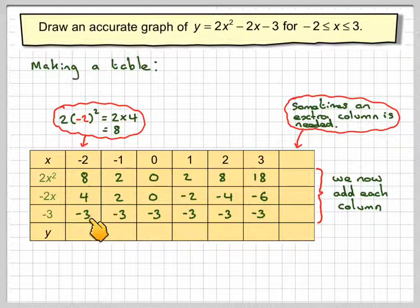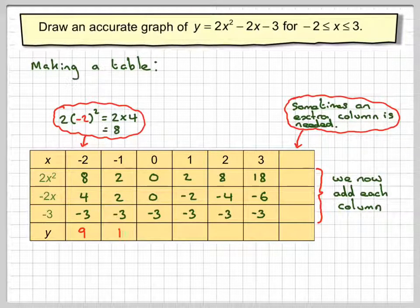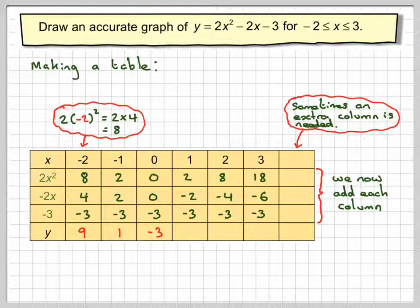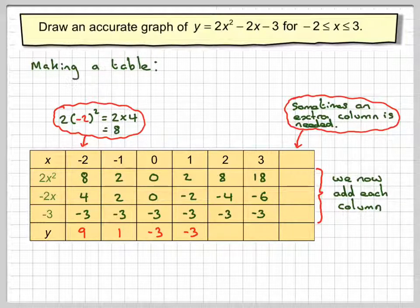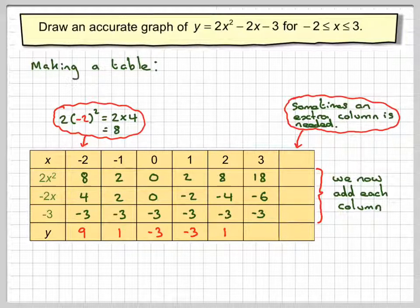So we do 8 plus 4 minus 3, we get 9. Then 2 plus 2 minus 3, we get 1. Then 0 plus 0 minus 3, we get minus 3. Then 2 plus minus 2 minus 3 gives me minus 3. Then 8 minus 4 minus 3, we get minus 1. And 18 minus 6 minus 3 is going to give me 9.